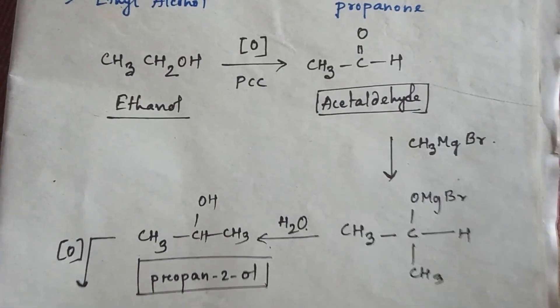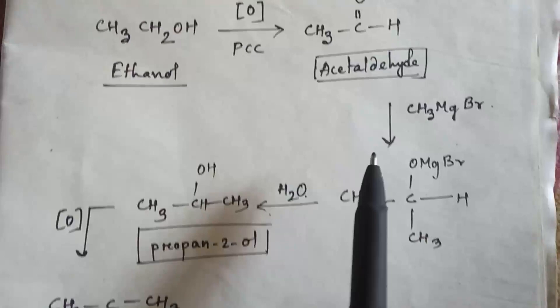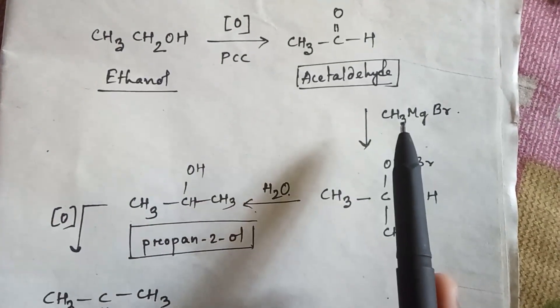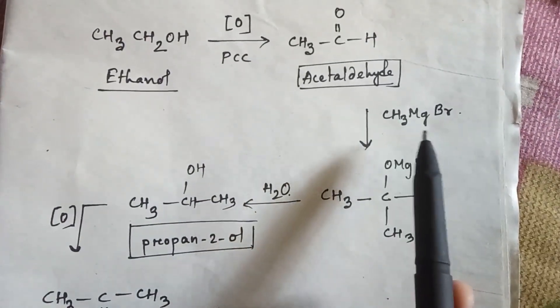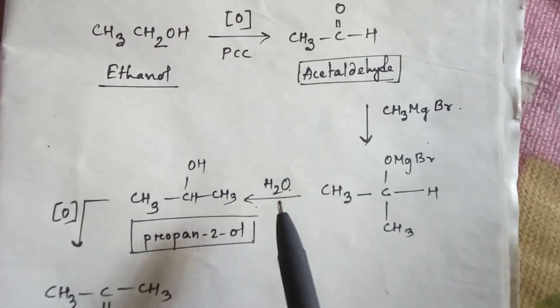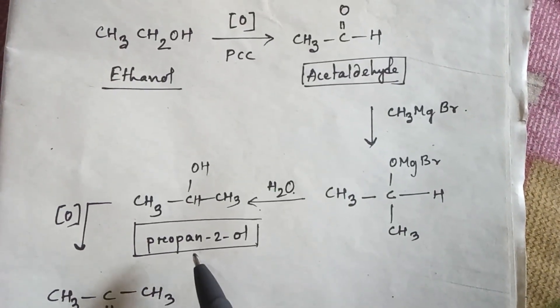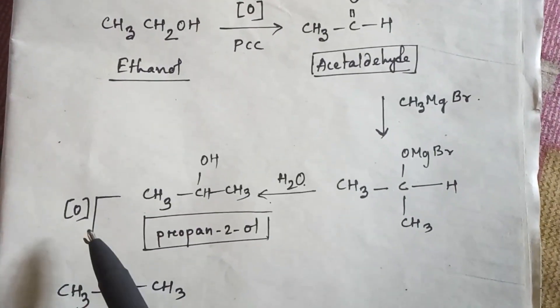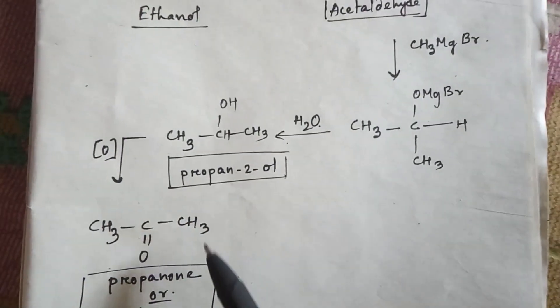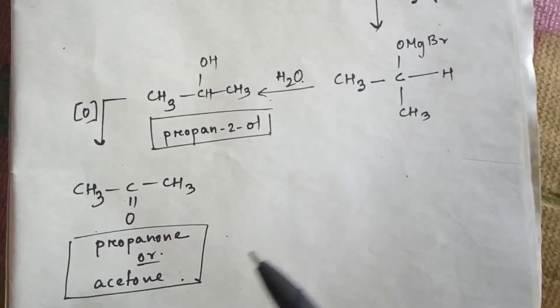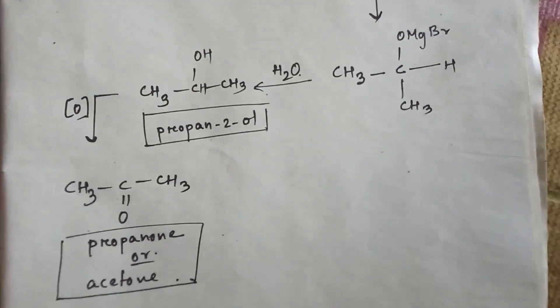So this is the process from ethanol to propanone: first convert ethanol into acetaldehyde, then use Grignard reagent, then do hydrolysis and you will get a 2° alcohol — here it is propan-2-ol — then do oxidation of that 2° alcohol and you will get a ketone, here it is propanone or acetone. Now let's see the reverse process.